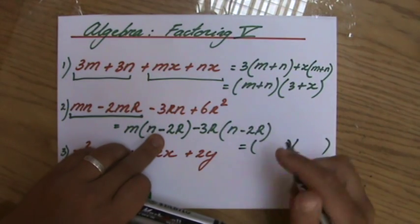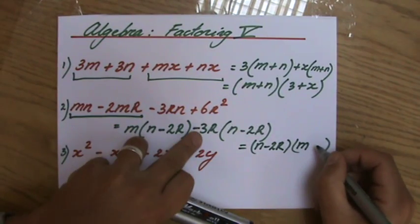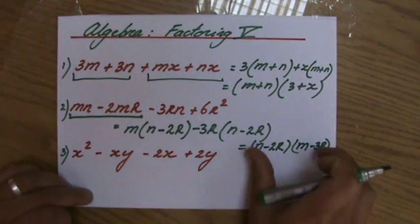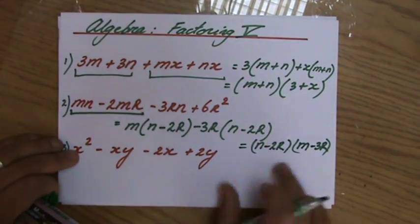So my final answer, it is the same now. So n minus 2r and then m minus 3r. Okay, finished. You can expand that yourself and check and see that you've done it correctly.